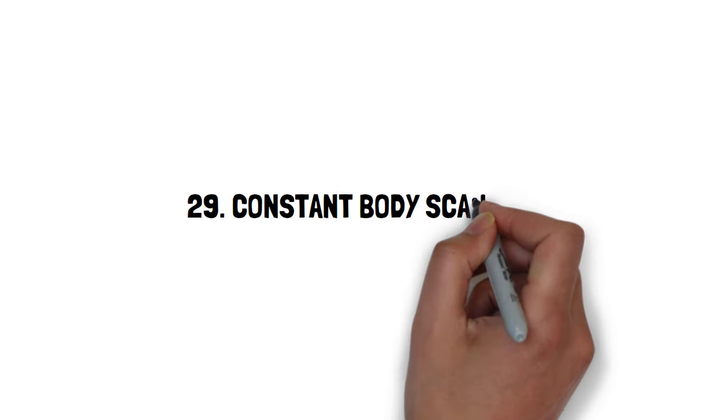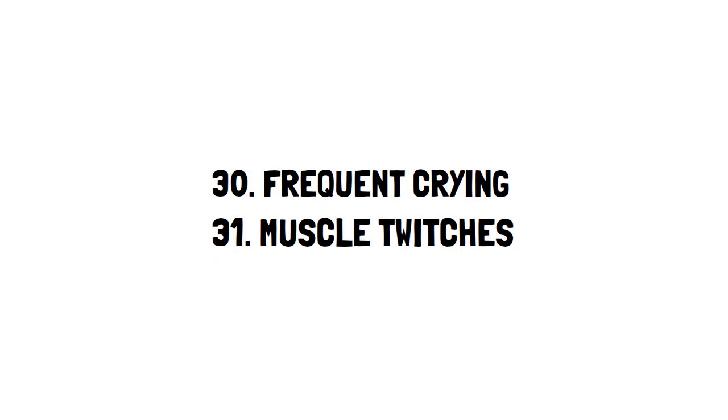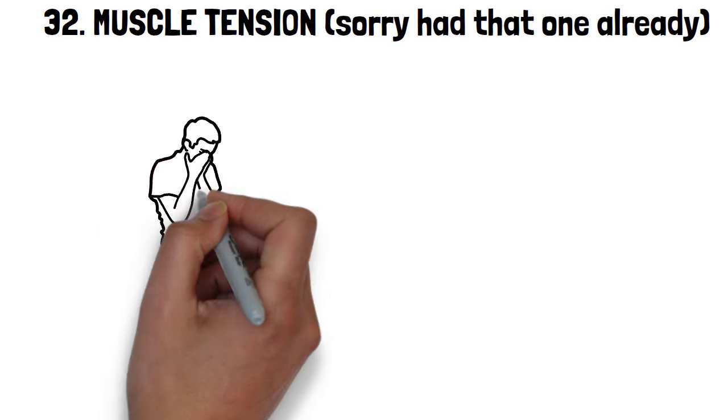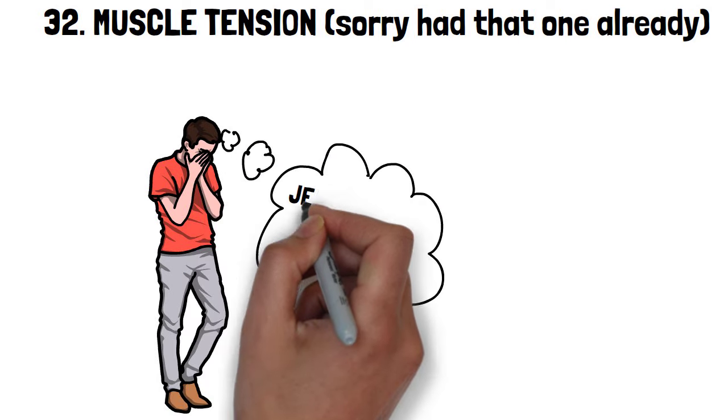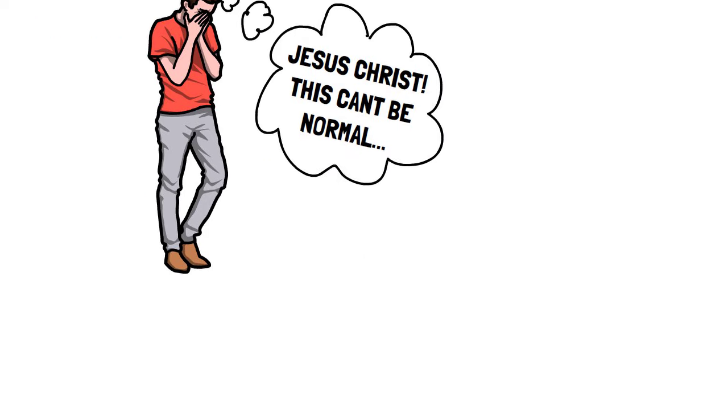Twenty-nine, constant body checking and scanning. Always on the lookout for symptoms. Thirty, frequent crying. Thirty-one, muscle twitches. Thirty-two, muscle tension. For me, this was something I dealt with 24-7 and was the reason for most of the other anxiety symptoms. My entire body was so tense and hurtful, it kept me up at night, not being able to fall asleep.